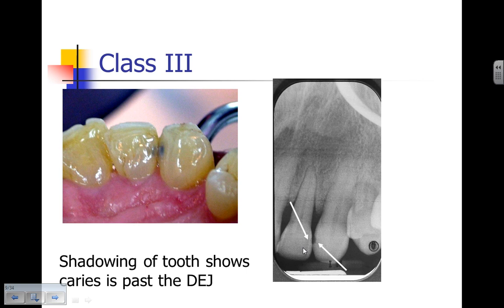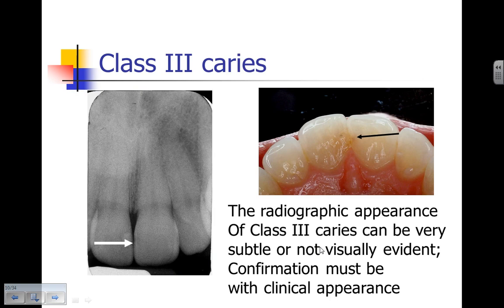Radiographically, when we look at tooth number 10 we can barely notice any caries lesion, but looking at number 11 on the mesial surface the caries is readily apparent. We need both radiographic and clinical views to make our definitive diagnosis. The radiographic appearance of Class 3 caries can be very subtle and not visually evident even with transillumination, so we confirm caries both radiographically and clinically.